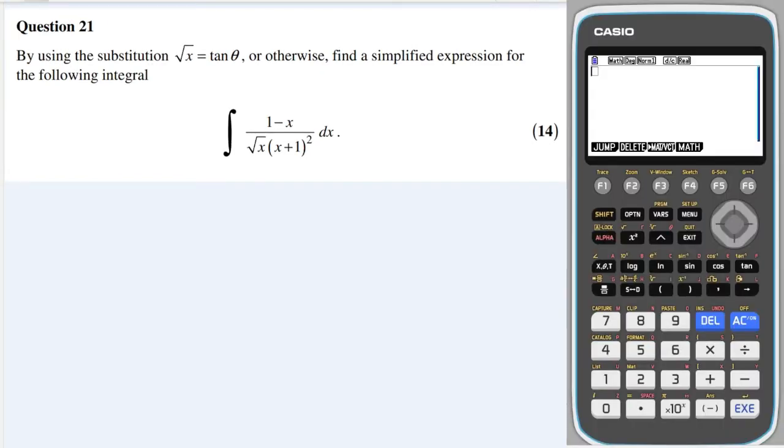Okay, here we go. It's a substitution and we are given the substitution which is very useful. We are told that root x is equal to tan theta. So the first thing I would do whenever I've got a square root in my substitution, I would always square both sides. Much easier dealing with squares than it is square roots.